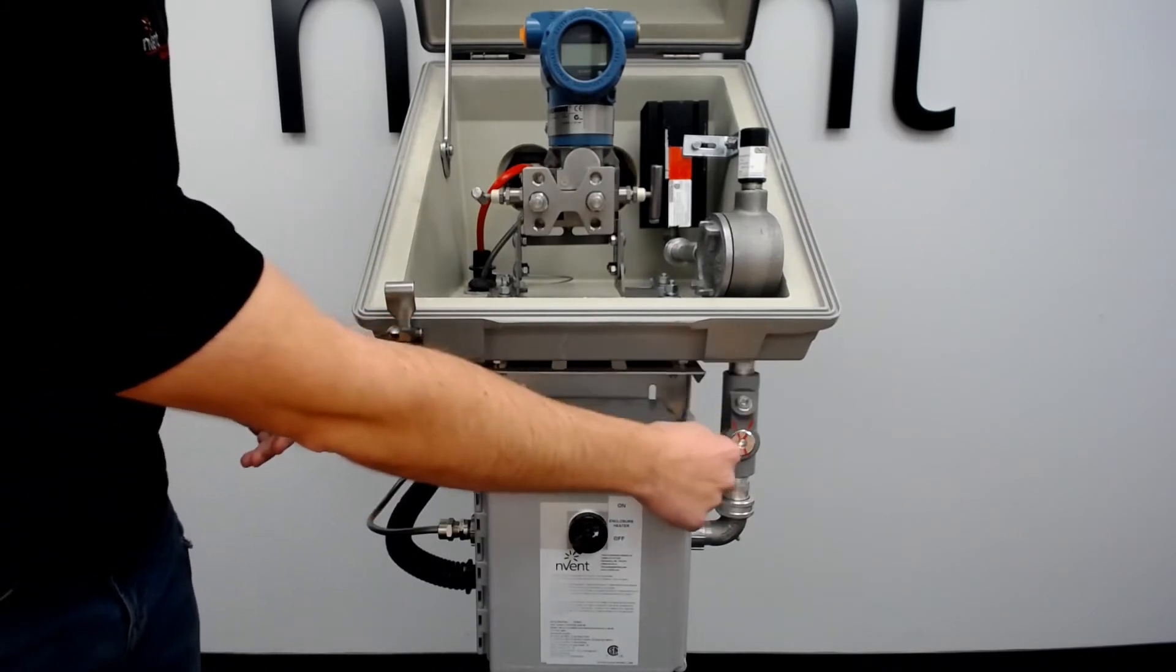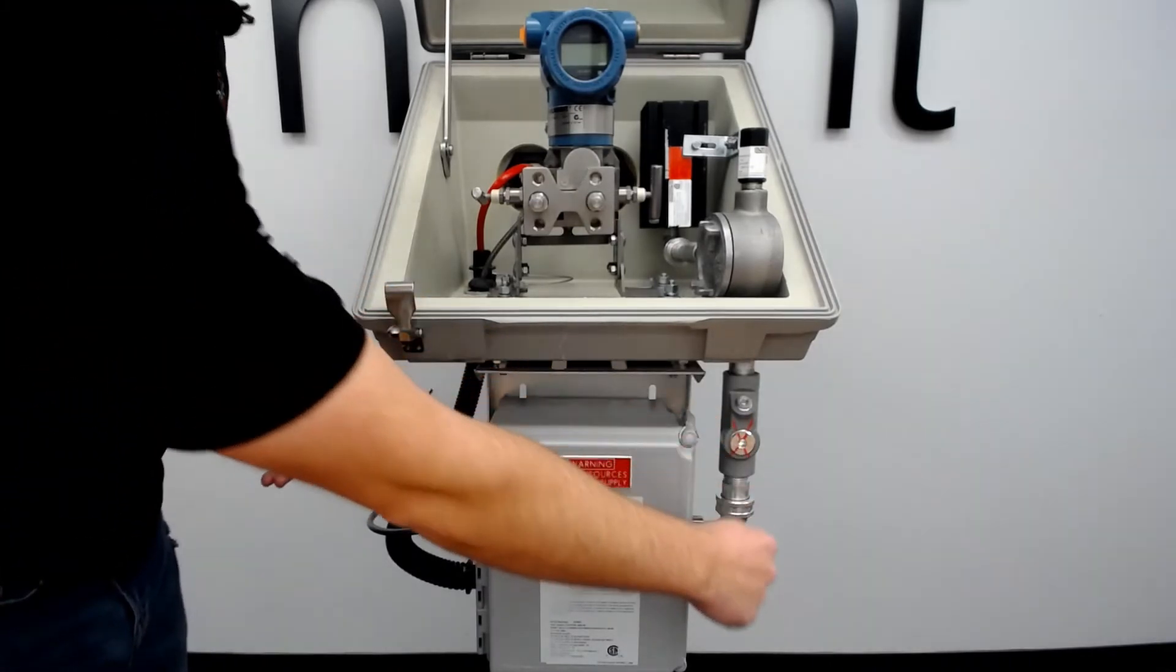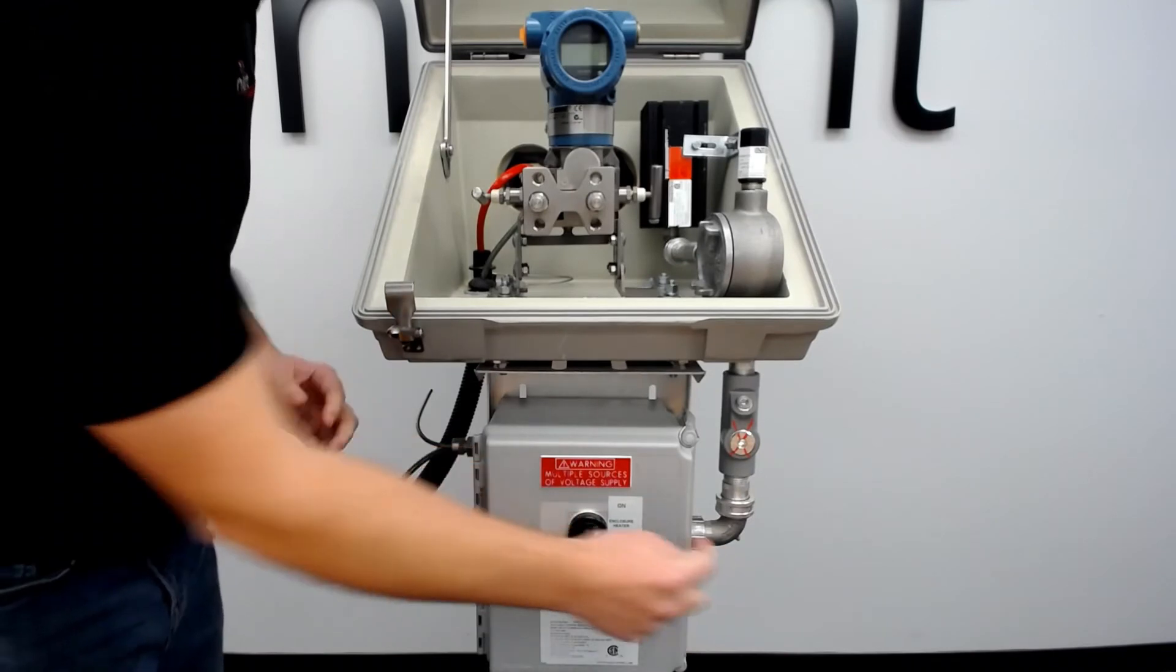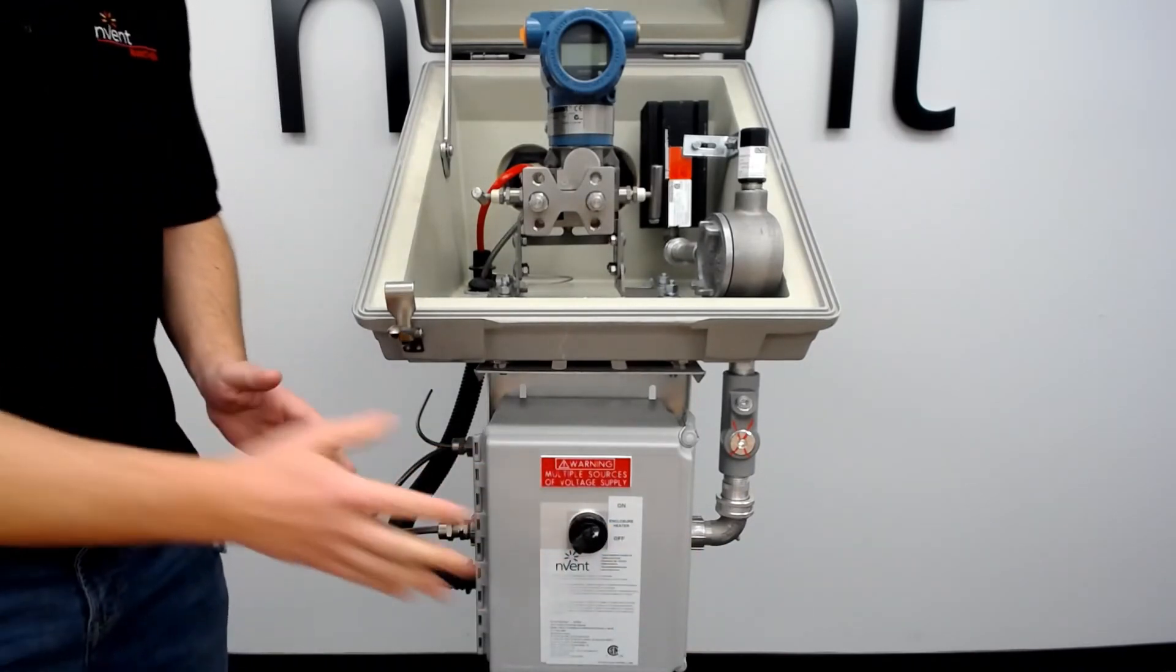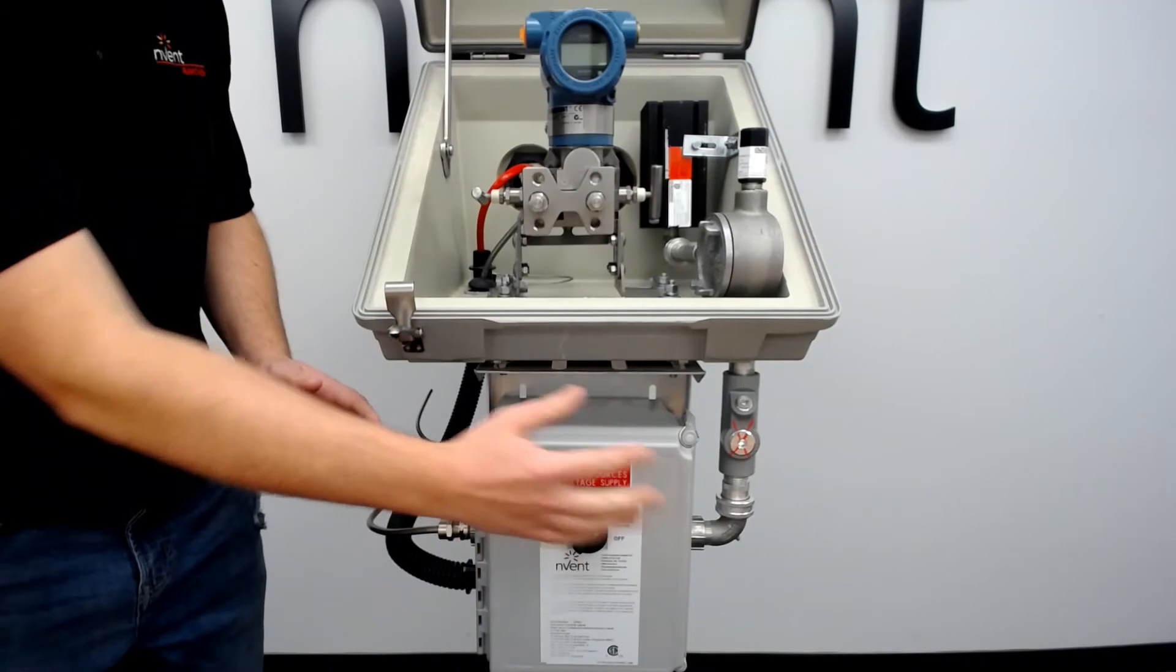There is a conduit seal here that goes into this junction box with a 4X rated hub, because this is a 4X rated enclosure or junction box.